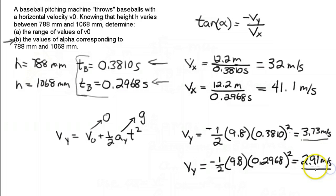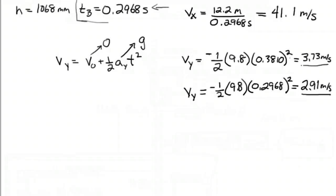So now we can go and calculate those angles. In one case, the tangent of alpha is going to be 3.73 meters per second divided by 32.02.